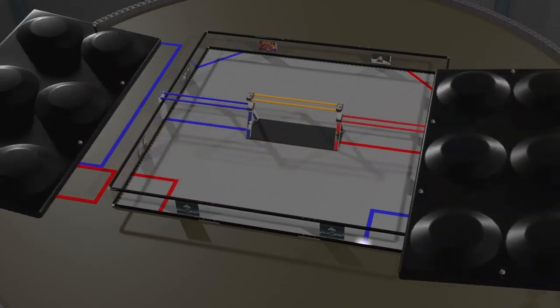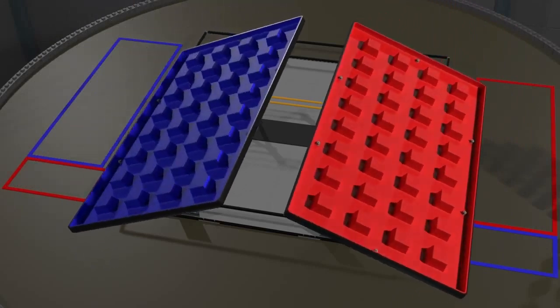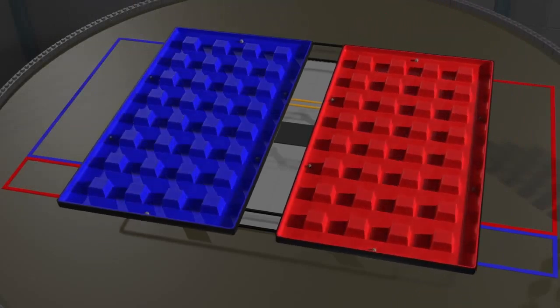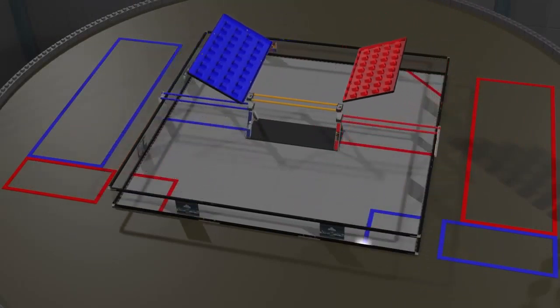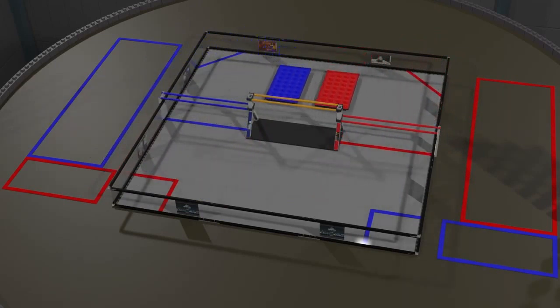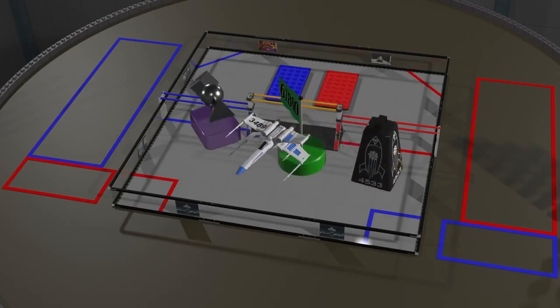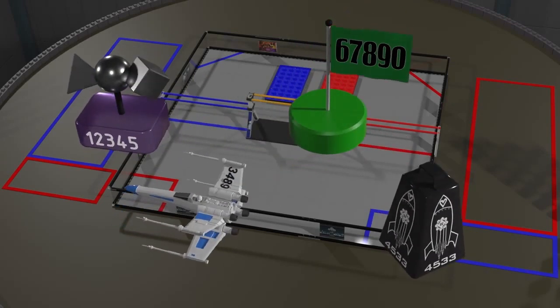During gameplay, stones are assembled onto alliance-specific foundations. These are placed in the center of the building zone but can be moved by robots during gameplay. Each team can design and build a special capstone, which may be used to score additional points.